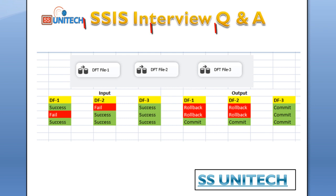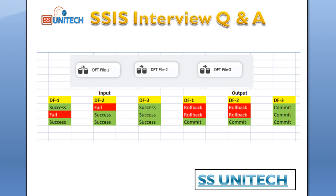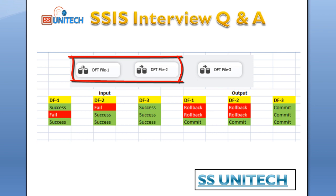As we can see, we have three data flow tasks: first, second, and third. The question is: we want to load data from data flow task one and two, but if any one of these fails, the other should be rolled back. Data flow task three will move forward independently — it is not dependent on the first and second. The first and second are dependent on each other.